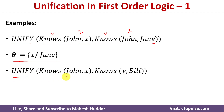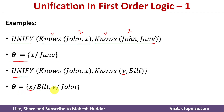Next, we want to perform unification between Knows(John, x) and Knows(y, Bill). Again, Knows is the predicate symbol in both expressions, and there are two arguments in both, so we can perform unification. We replace y with John and x with Bill. The expressions become Knows(John, Bill) and Knows(John, Bill), which are exactly identical. So the substitution theta is: x should be replaced with Bill and y should be replaced with John.